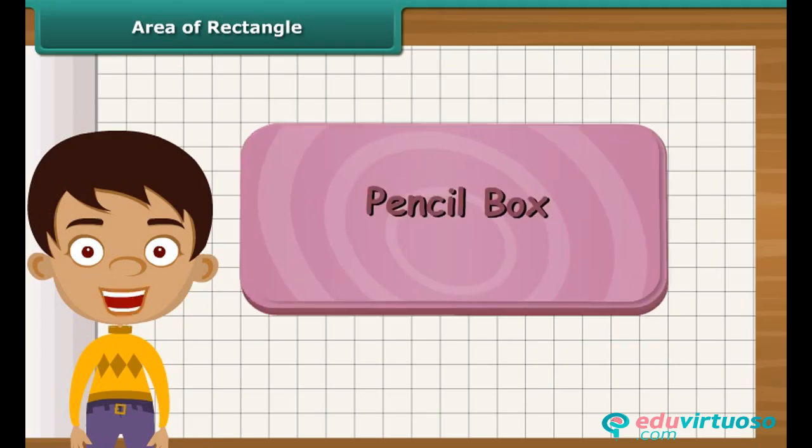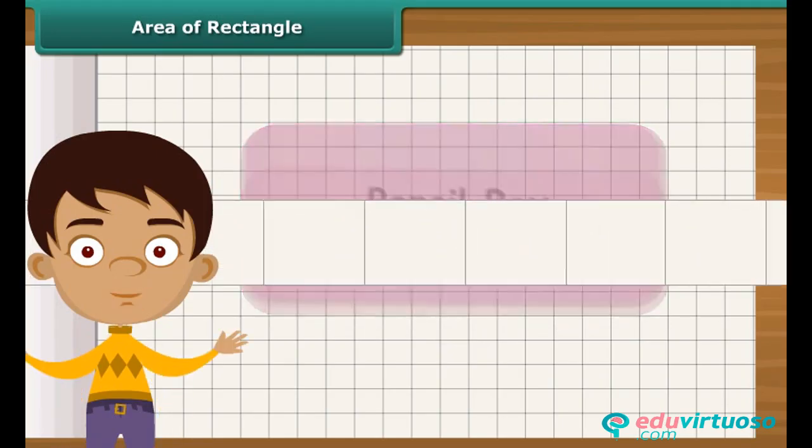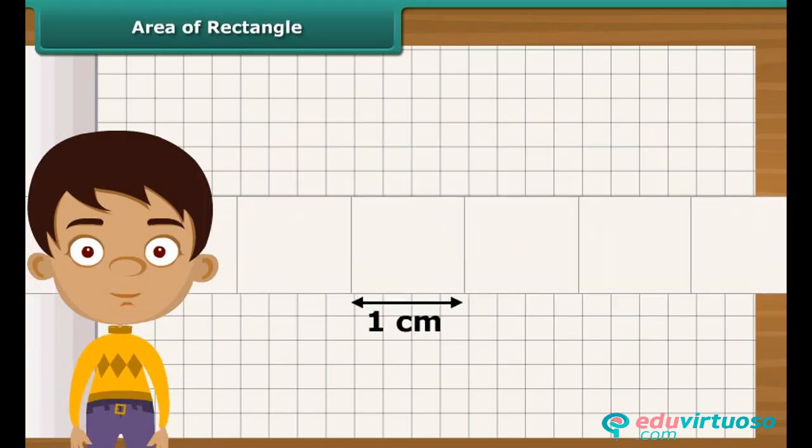Take a rectangular pencil box. Place it on a squared paper. The length of the box is 15 centimeters. Arrange 15 squares of side 1 centimeter along its length.